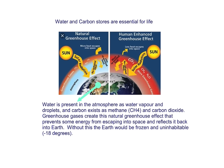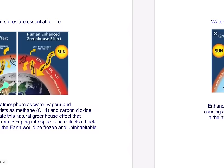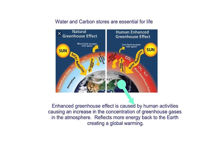To summarise: water and carbon stores are essential for life. Water is present in the atmosphere as vapour and droplets; carbon exists as methane and CO₂. These greenhouse gases create the natural greenhouse effect, preventing some energy from escaping to space and reflecting it back to Earth. Without this, Earth would be frozen at minus 18 degrees. The human-enhanced greenhouse effect is caused by human activities increasing greenhouse gases, reflecting more energy back into the earth and creating global warming.